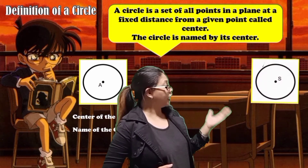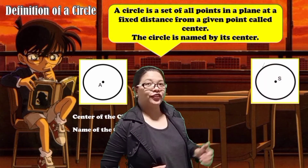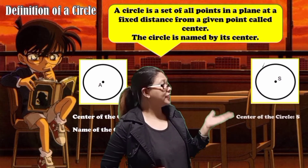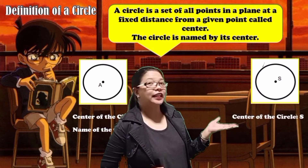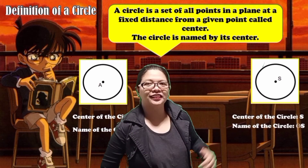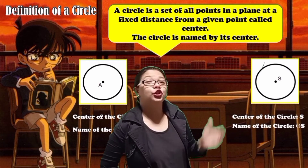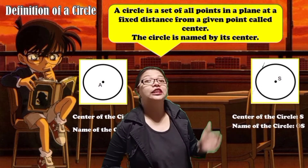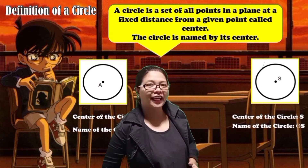Now look at this illustration. The center of a circle is point S. So we can name the circle as Circle S.